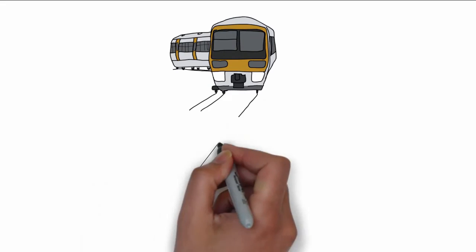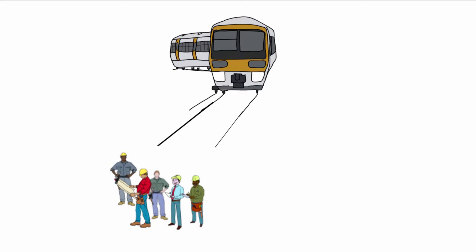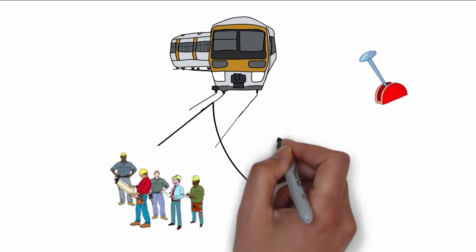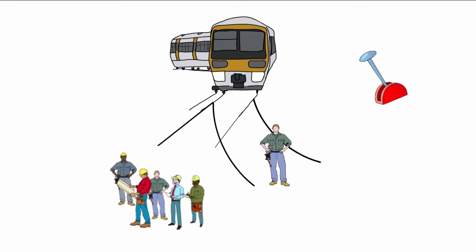You spot a trolley barreling down the tracks towards five workers. There is a lever you can pull to switch the trolley over to another track, but there is a worker on this track as well. You quickly assess, and other than the lever, there are no other feasible options. It is either one life or five lives. Do you pull the lever?